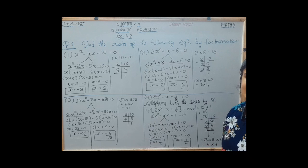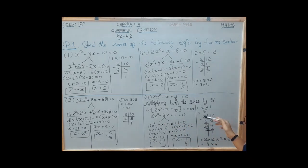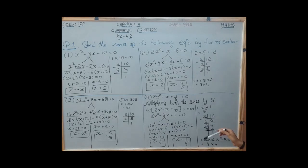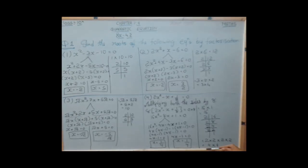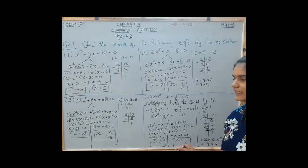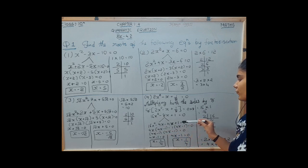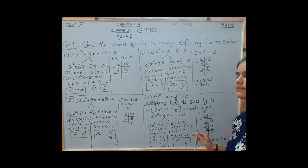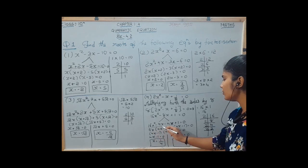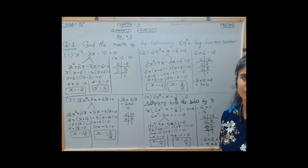For the factorization, 16 into 1 equals 16 and its factors are 4 and 4. The four-term quadratic equation is 16x squared minus 4x minus 4x plus 1 equals 0. By making pairs and taking common, we get both roots as 1 upon 4 and 1 upon 4 — both roots are equal.